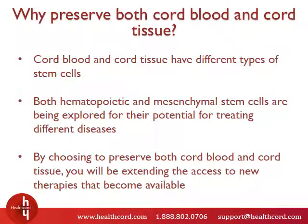So to answer the question: both cord blood and cord tissue are sources of stem cells. These stem cells have different properties and are being explored for their therapeutic potential to treat different diseases. By banking both cord blood and cord tissue, you'll be ensuring that your child will have access to an extended range of new stem cell therapies that become available in their lifetime.